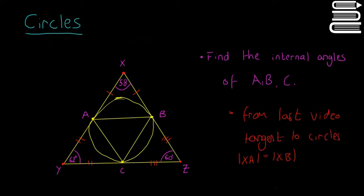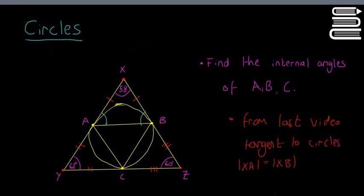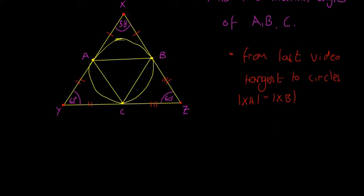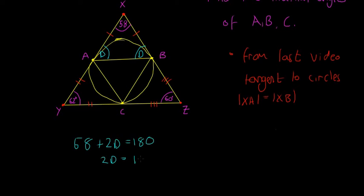So now we have three different isosceles triangles. We know that in isosceles triangles the two base angles are the same. That means it's a lot easier to calculate these base angles now that we know they're isosceles triangles — those two angles, those angles, and those angles.